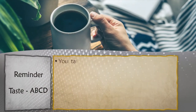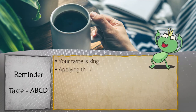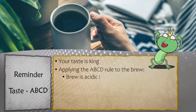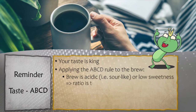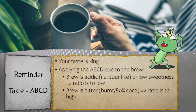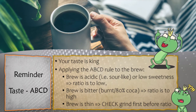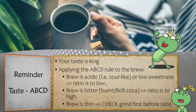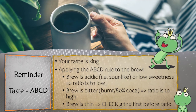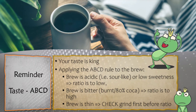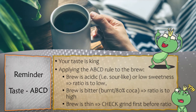How does this affect the taste? Let's go back to our reminder: only you can taste the way you taste — only your taste is king. If the brew is acidic or sour, or has low sweetness, then the ratio is typically too low. If the brew is bitter, then the ratio could be too high, meaning you're getting a lot of deteriorated flavors. If the brew is thin, check your grind first rather than your ratio, because typically that means your grind is wrong.